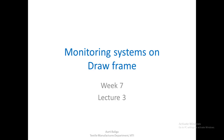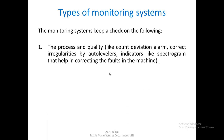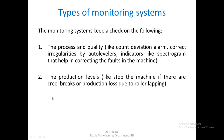Today we are going to study the monitoring systems on drawframe. First, we will see the types of monitoring systems available. The monitoring system is supposed to keep a check on the process as well as the quality. Quality terms include count deviation alarms, and there are systems to correct irregularities like the auto leveler. Certain indicators given by the machine, like the spectrogram, help in correcting faults. Production levels are also checked — for example, stopping of the machine if there is a creel break or production loss due to roller lapping.